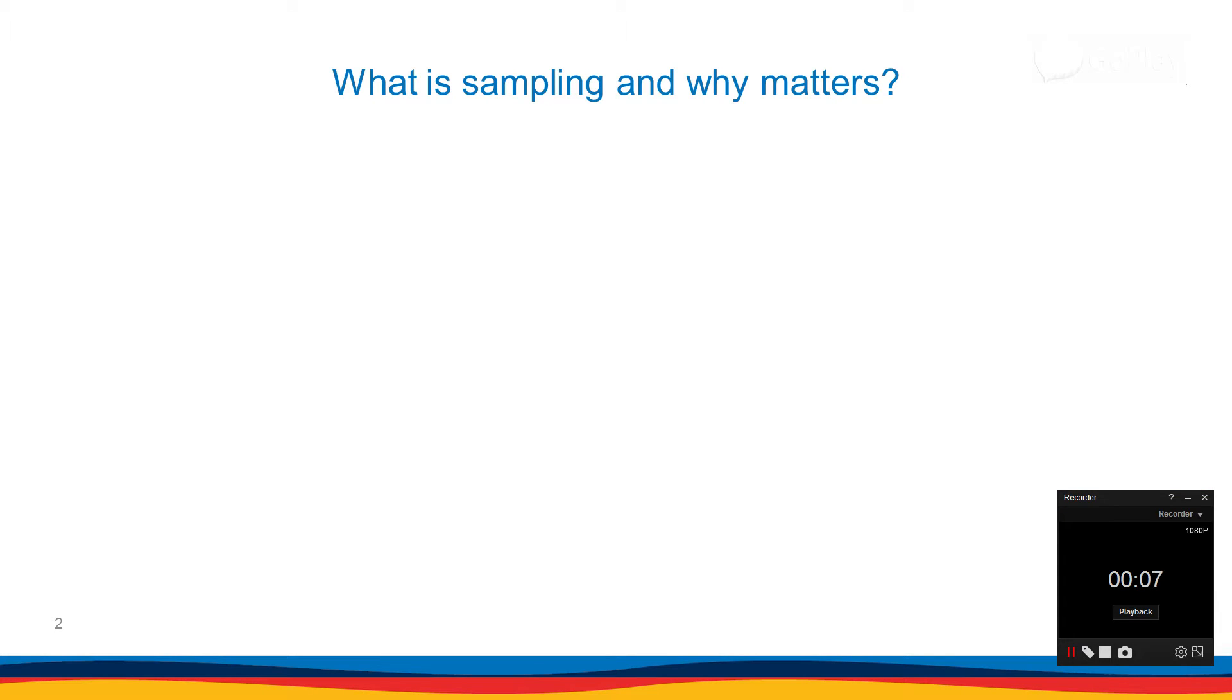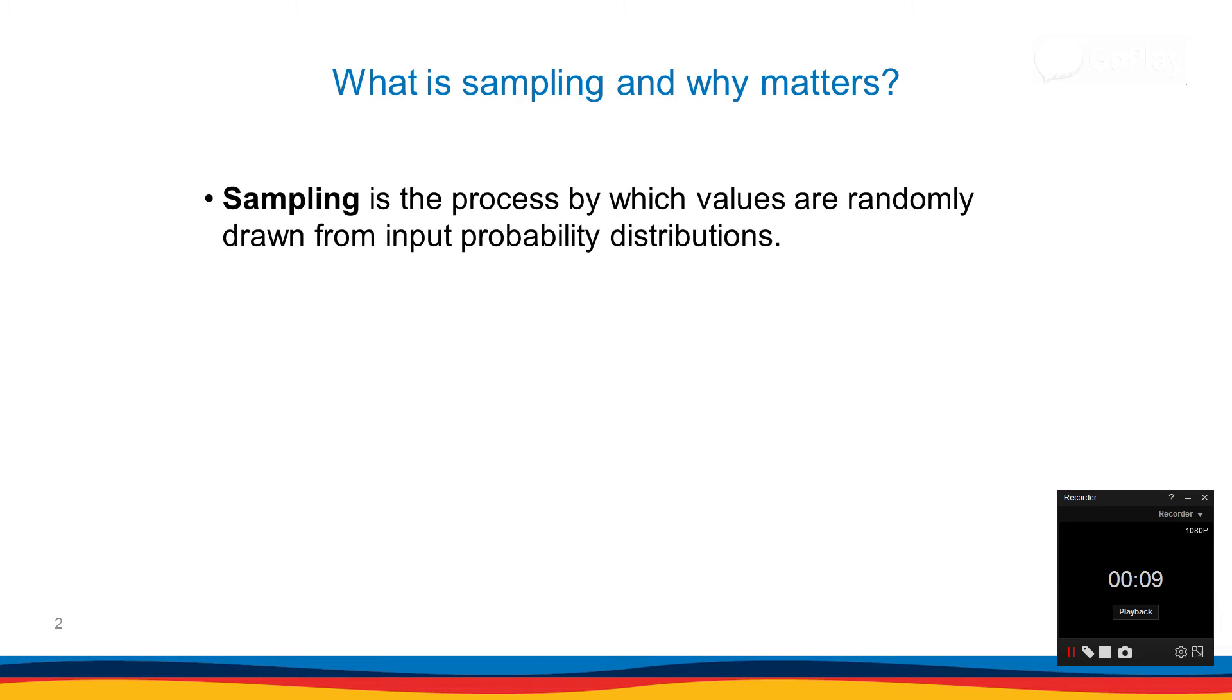What is sampling and why does that matter? Sampling is the process by which values are randomly drawn from probability distributions. If you don't understand this sentence, don't worry, I'm going to make it clear soon.